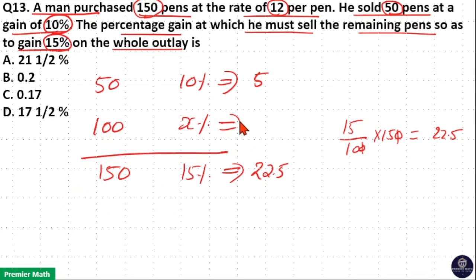Now, x percentage of 100 should be 22.5 minus 5. That is 17.5. Because these two should form the value 22.5. So, 10 percentage of 50 plus x percentage of 100 should form 15 percentage of 150.